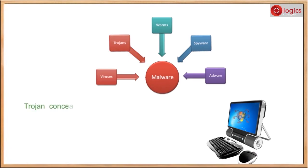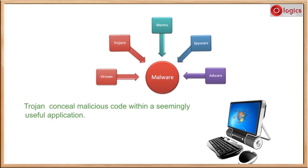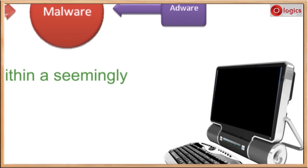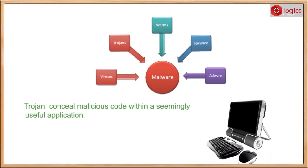Trojan is one kind of virus that hides inside. A Trojan consists of concealed malicious code within a seemingly useful application. For example, initially this game works well, but later it spreads the virus inside and makes your system damaged.